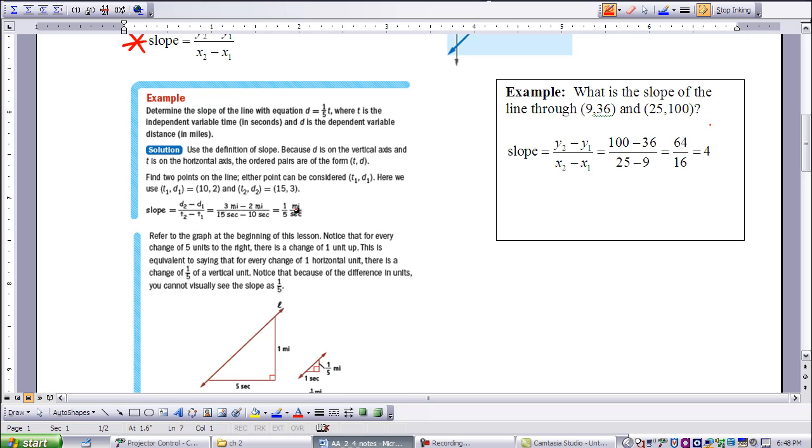Also, so what I want to see or want to talk about is the connection that there is between the one-fifth that we found as our slope and that this is a direct variation equation so that one-fifth is also standing for K.